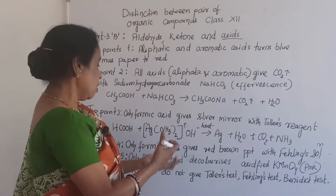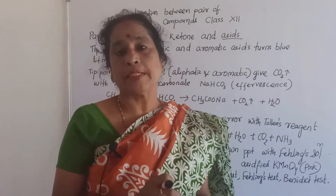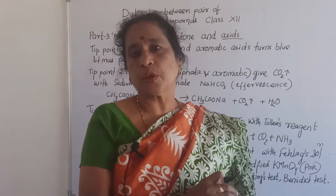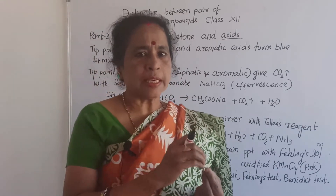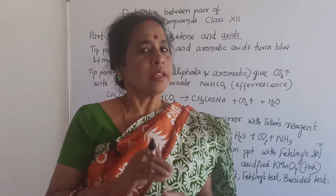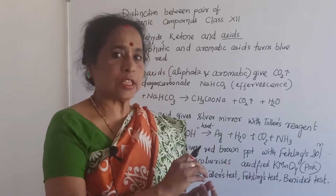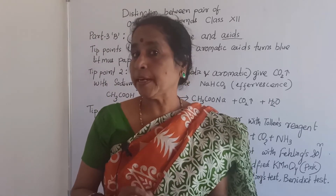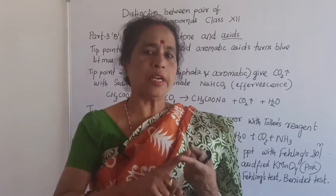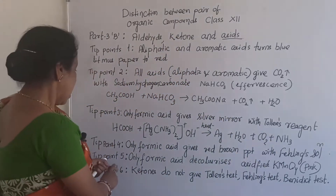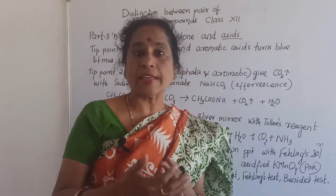Point 4: Formic acid also gives a red-brown precipitate with Fehling's solution and with Benedict's solution. Formic acid reacts with Fehling's solution and Benedict's solution to give a red-brown precipitate, but acetic acid or any other acid will not give this test — only formic acid has this nature.